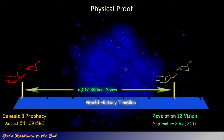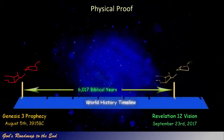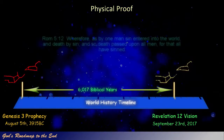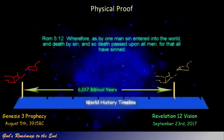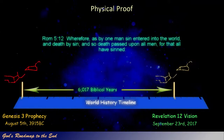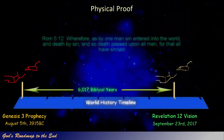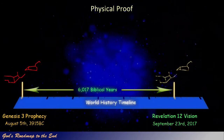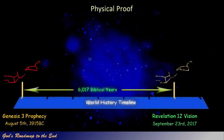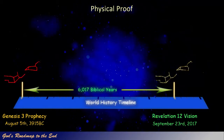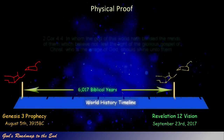We know that at the point that the prophecy was given, sin entered the world and death by sin, as seen in Romans 5. Romans 5 verse 12: Wherefore, as by one man sin entered into the world, and death by sin, and so death passed upon all men, for that all have sinned. Before this point there was no death, according to God's word. At this point Satan also gained control over the world and became the god of this world, as described in 2 Corinthians 4.